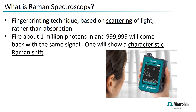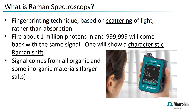For every one million photons we fire in, all but one will come back with exactly the same wavelength. That approximately one in a million will show a characteristic shift called the Raman Shift, which allows us to identify the materials. The signal comes from all organic materials and some larger inorganic materials.